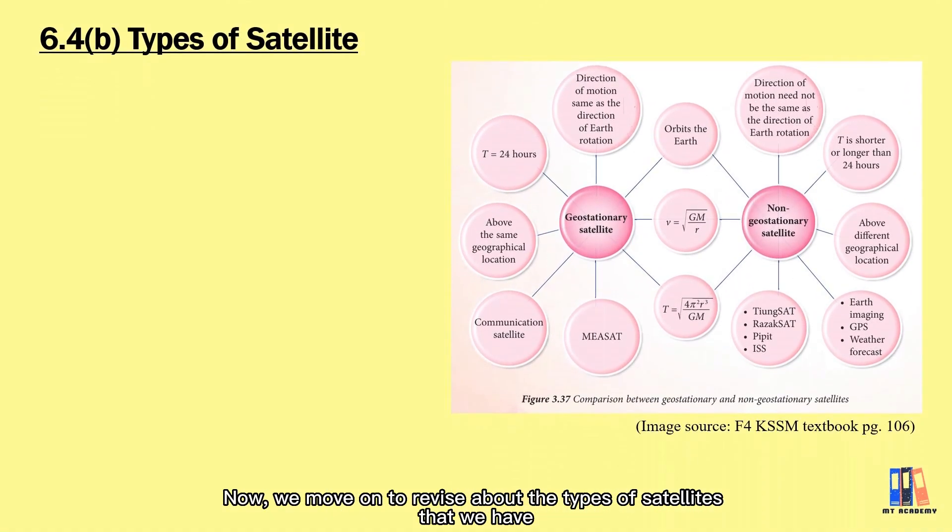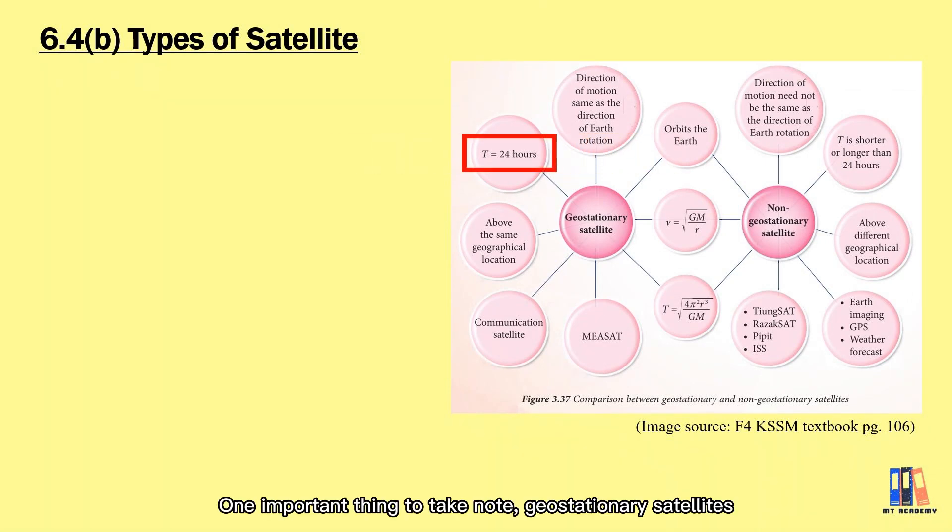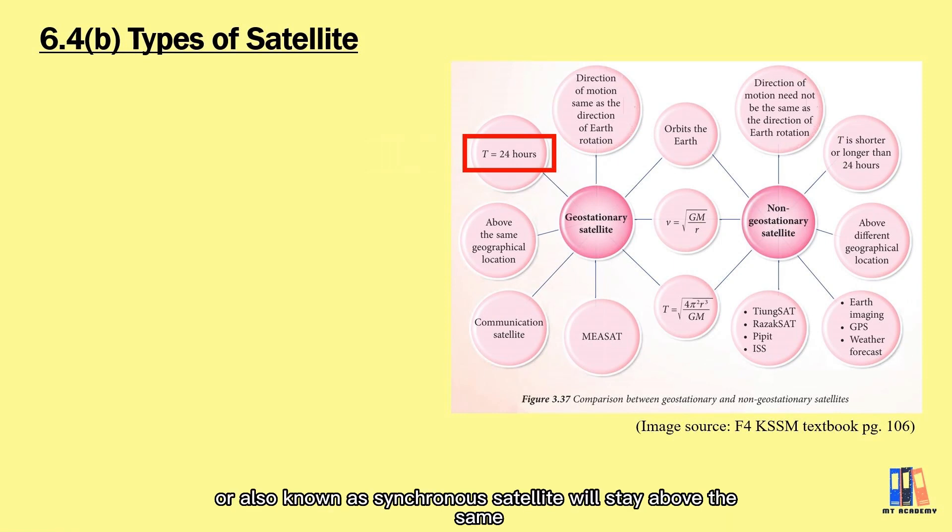Now, we move on to revise about the types of satellites that we have. It can be either geostationary or non-geostationary satellite, which can be differentiated by the period of circular motion. One important thing to take note, geostationary satellite, or also known as synchronous satellite, will stay above the same geographical location on Earth. It is mostly used for communication satellites that we need them to stay stationary relative to Earth, so that we can maintain the distance for a stable connection. For Earth, it rotates about its axis with a period of 24 hours, so the satellite also must have the same period to stay at the same geographical location.